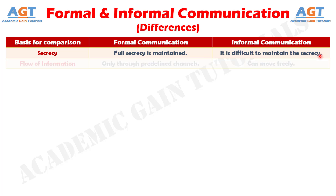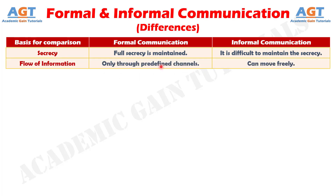And difference number 10: flow of information takes place only through predefined channels in formal communication, whereas in informal communication, information can move freely.